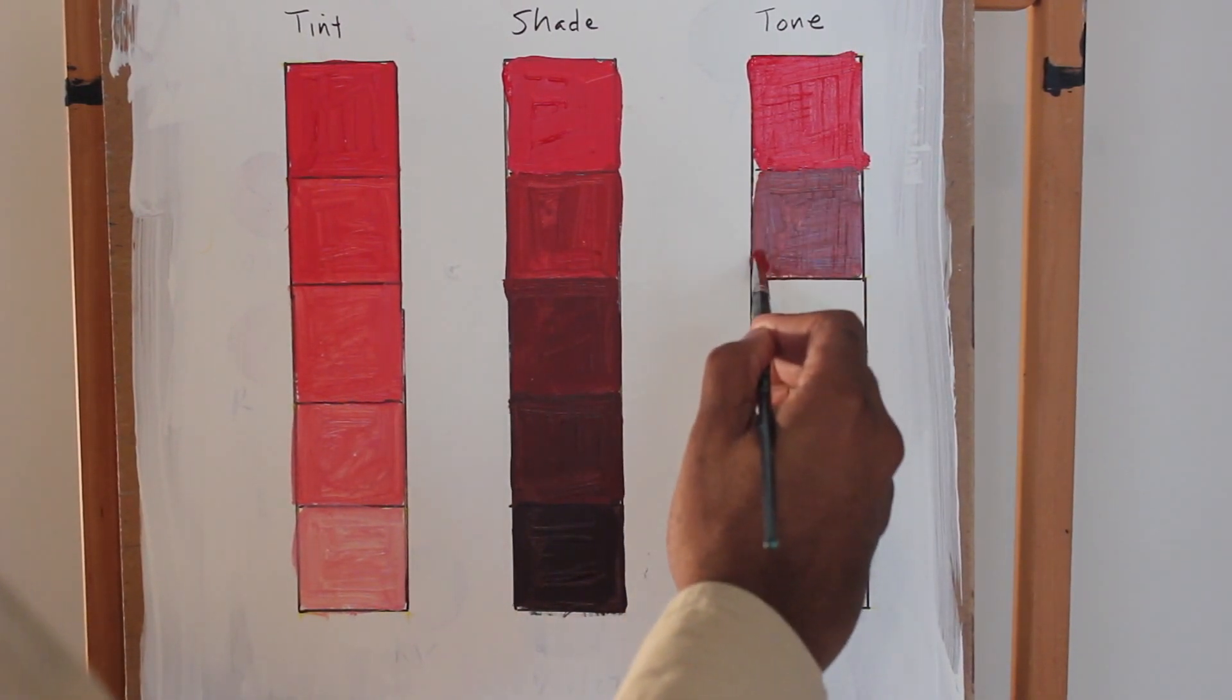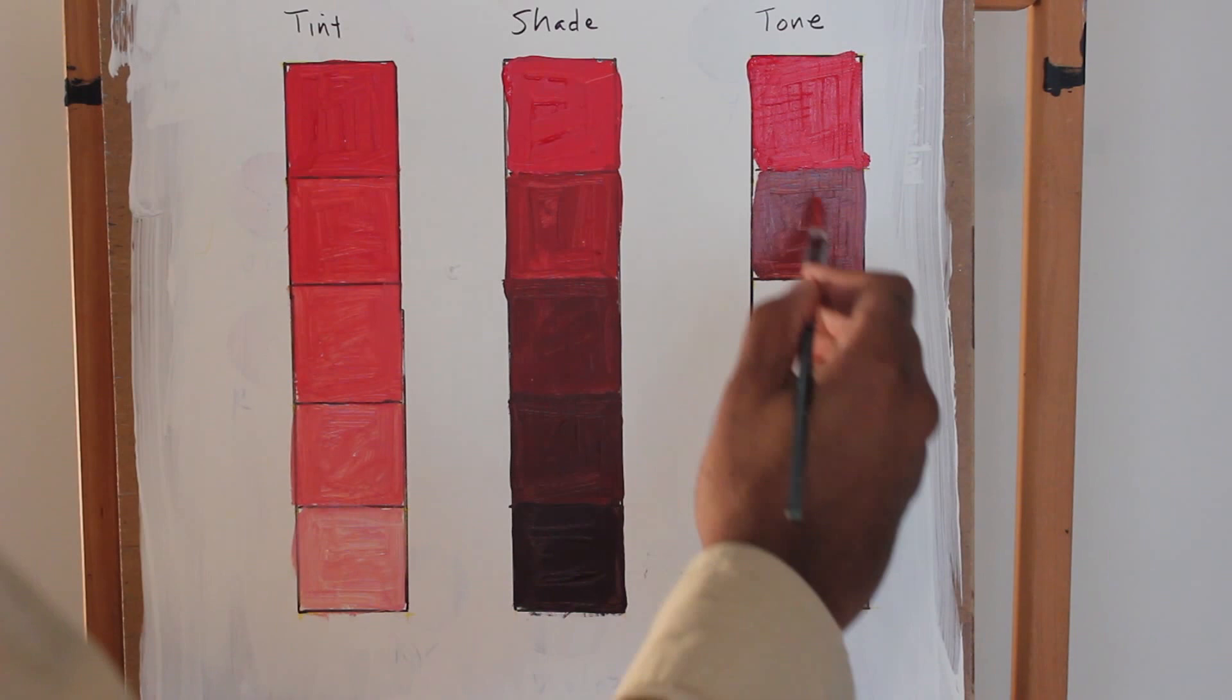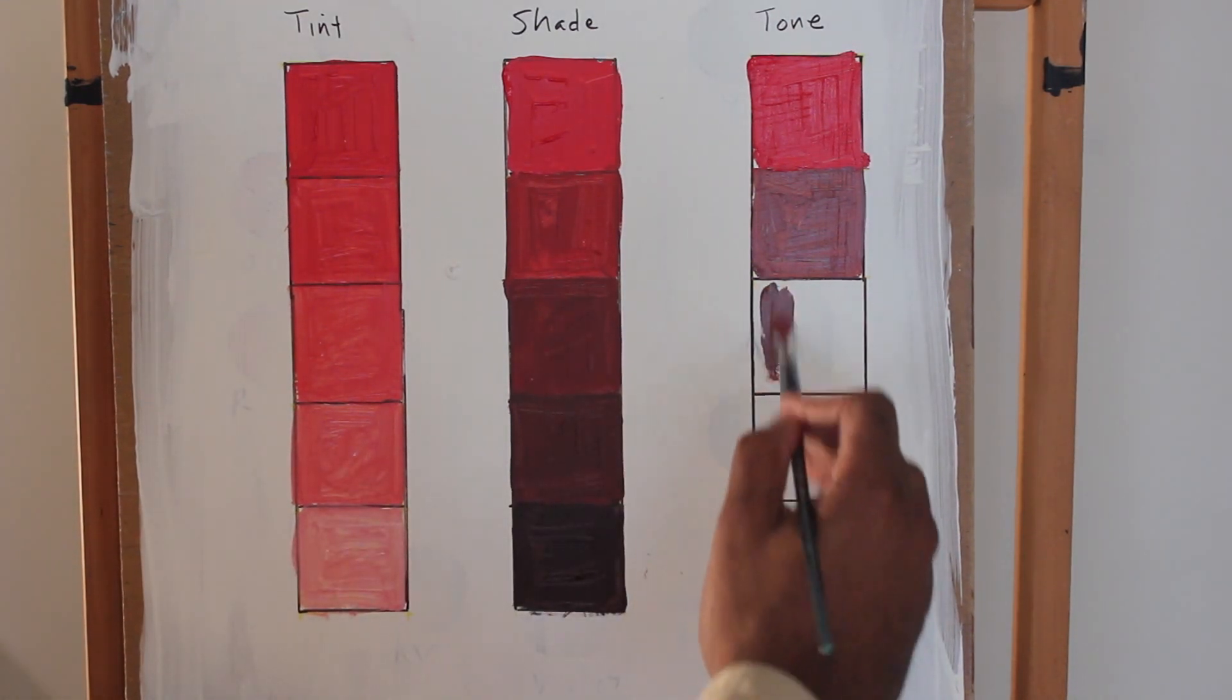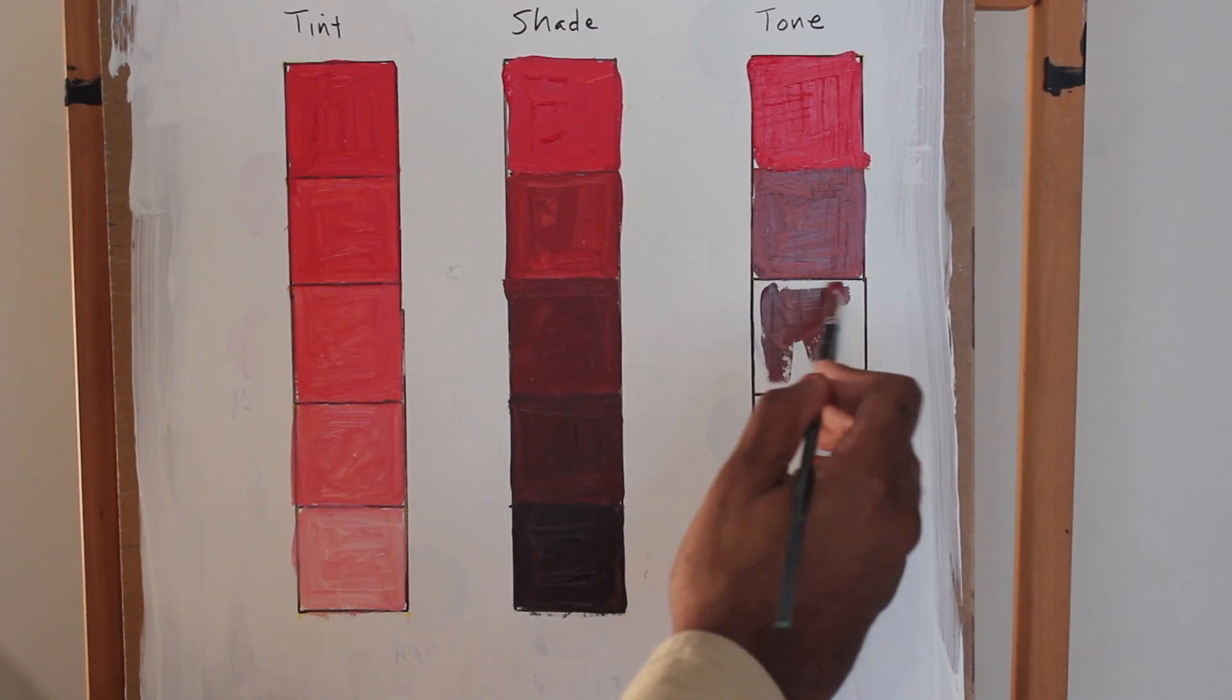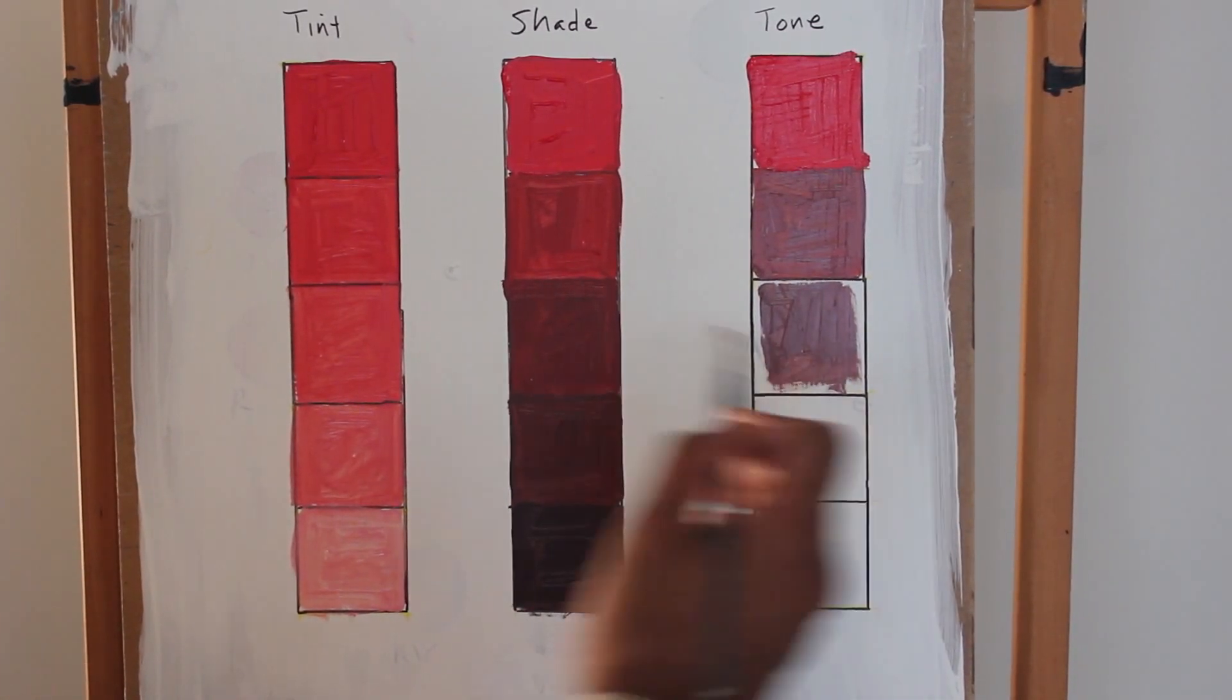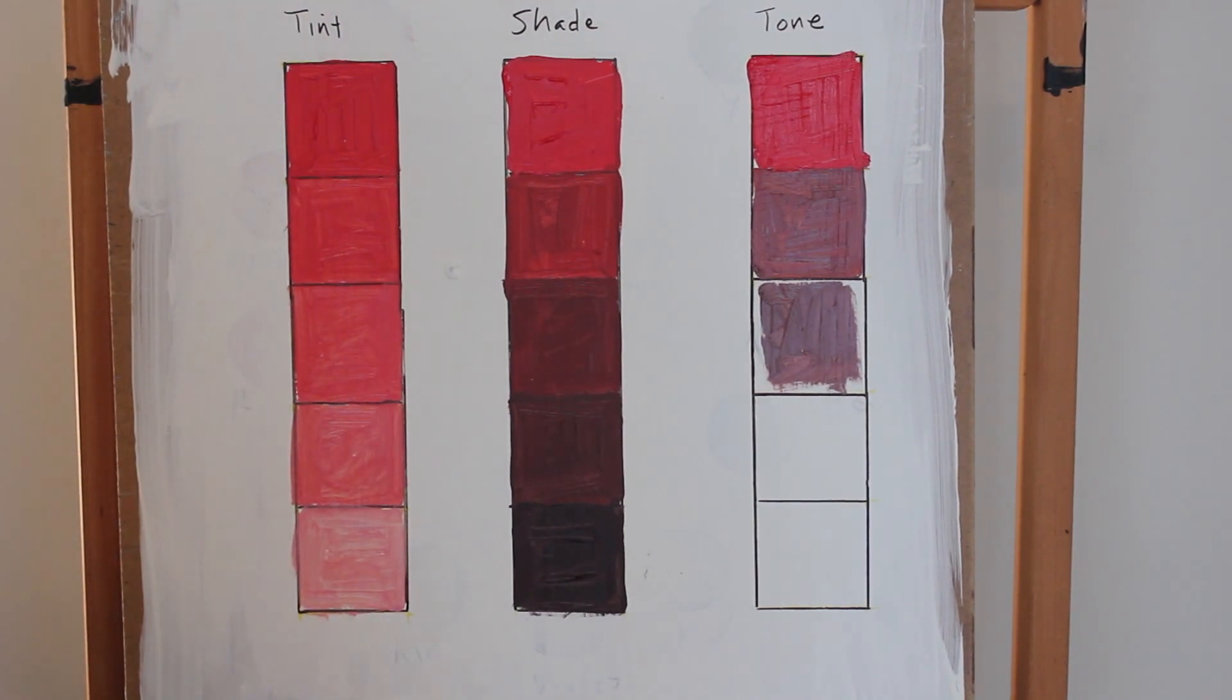To me, when you add gray to a particular color, it not just makes it dull, but it makes the color look really flat. The only word I can think of is it kind of looks dry. It's not as rich as the other colors or the colors that you see in the tint or the shade column.